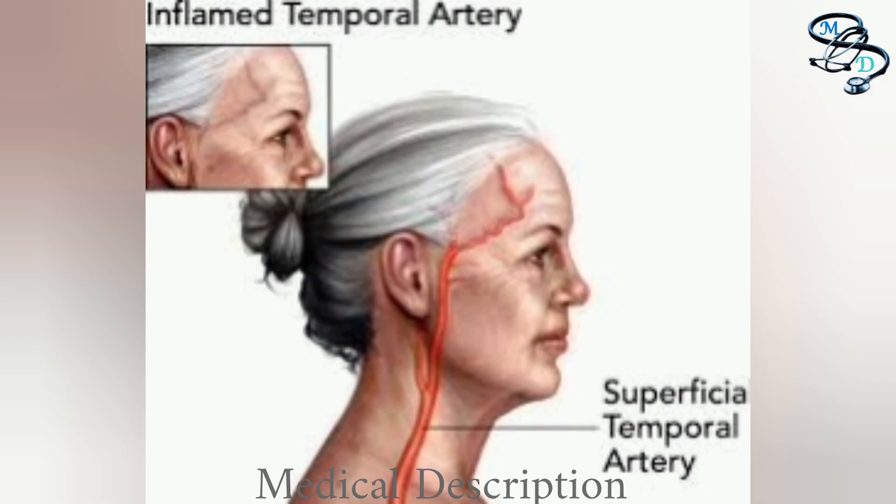The causes of temporal arthritis are poorly understood and there is no well-established trigger or risk factors. One cause may be a faulty immune response, where the immune system may attack the body. Temporal arthritis often occurs in people who also have polymyalgia rheumatica.